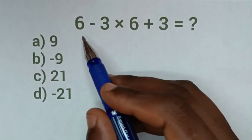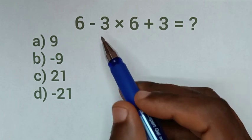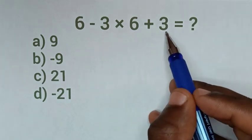Hello, how to solve this math problem which is 6 minus 3 times 6 plus 3.